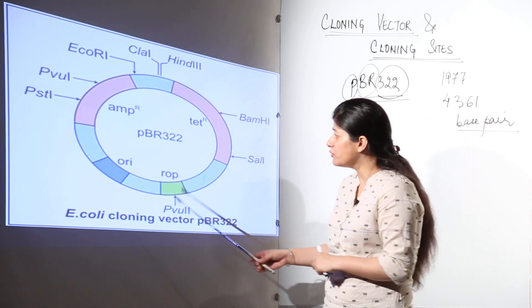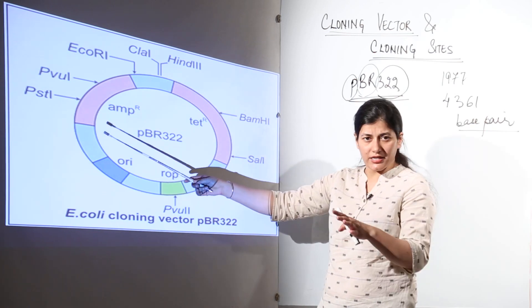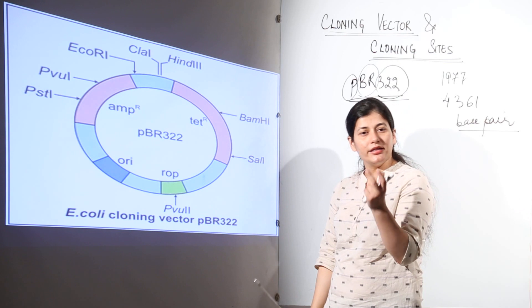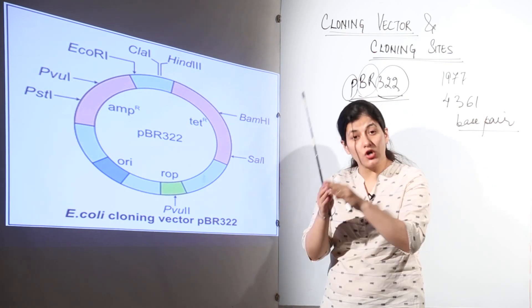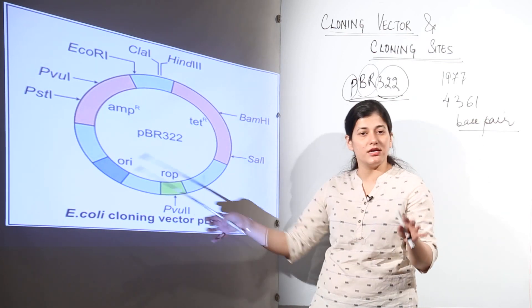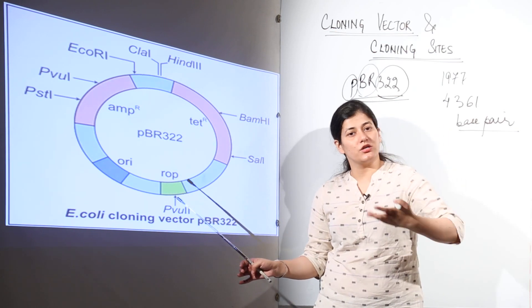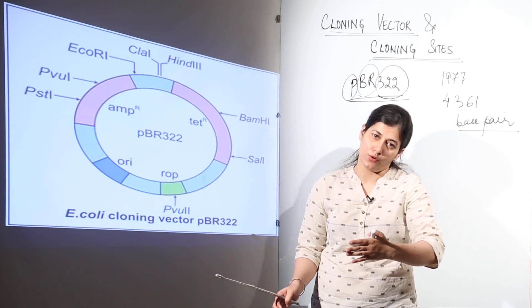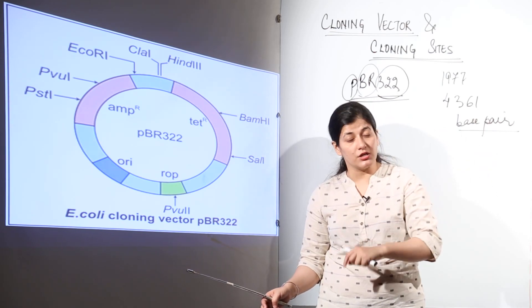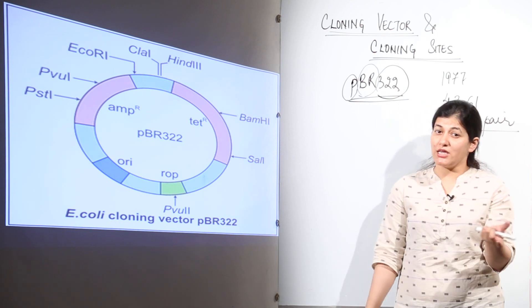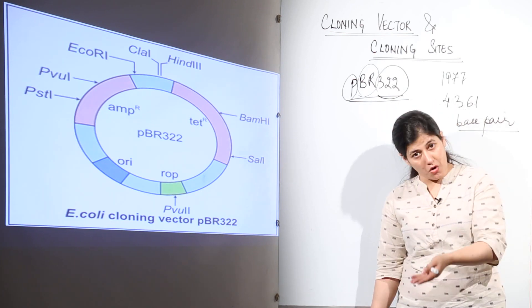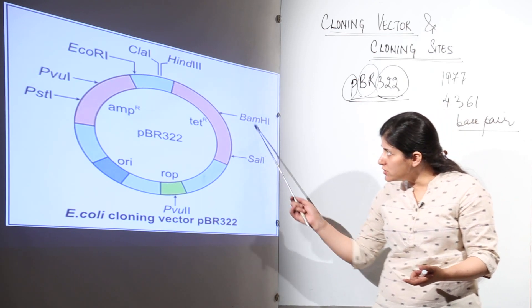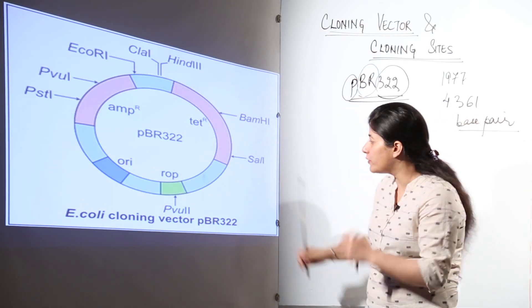This plasmid has two antibiotic resistances. When it enters E. coli, which originally has no resistance to either antibiotic, the bacteria will show resistance — confirming the plasmid has entered the host. This is called transformation. Whether the plasmid is recombinant or not can be identified using the restriction sites at our disposal.